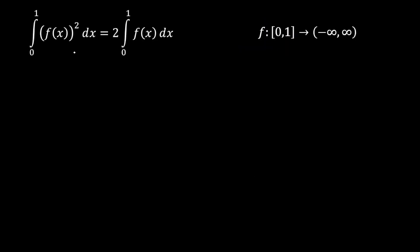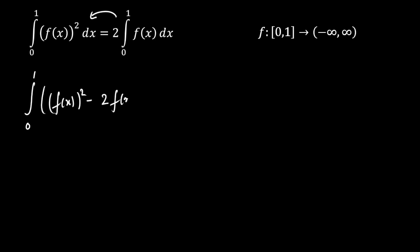The first thing I am going to do is take the right-hand term to the other side. So we will get the integration from 0 to 1 of f(x) whole square as it is, and here we will get minus 2 times f(x). Now, in order to make a perfect square, I am going to add 1 and subtract 1, with dx. This will be equal to 0.